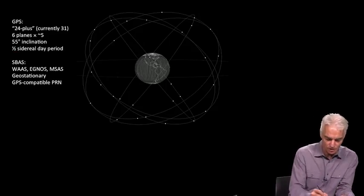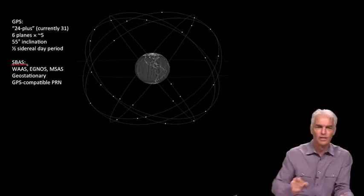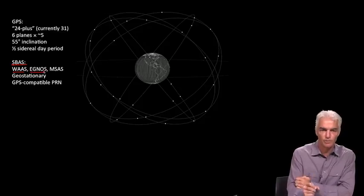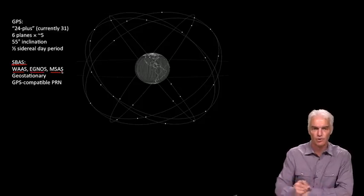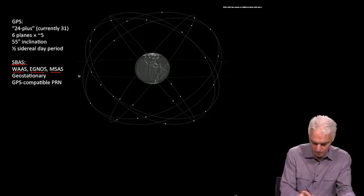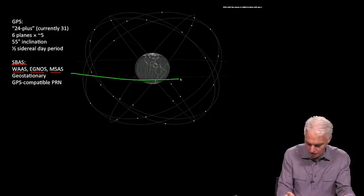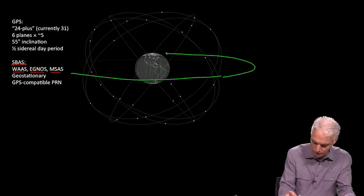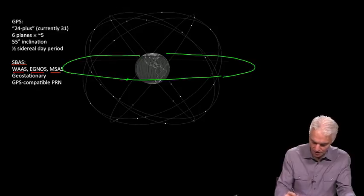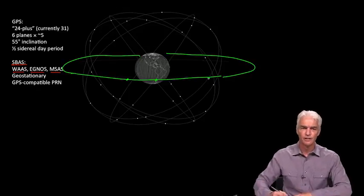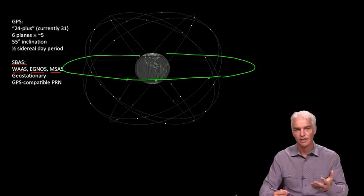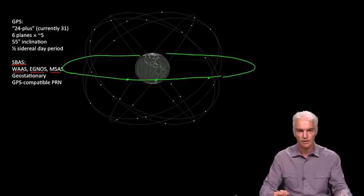And then GPS has the SBAS system—the space-based augmentation system—to augment it, made up of the WAAS satellites from the United States, EGNOS from the European Union, and MSAS from Japan. And these are all in an equatorial orbit, a geostationary orbit as we saw before, and so they each appear to stay stationary over whichever particular territory they were launched. And of course the WAAS satellites serve North America, EGNOS satellites serve Europe, and MSAS over East Asia.